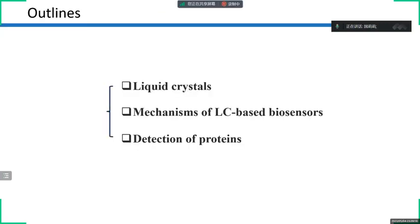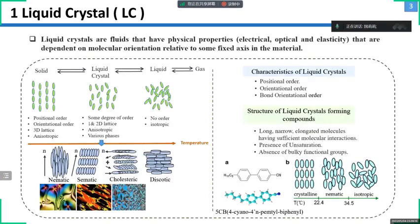First of all, about what liquid crystals are: they stay in the middle of the crystal state and the liquid state, so liquid crystals exhibit properties intermediate between a liquid and a crystal. There are four main categories of liquid crystals — nematics, smectics, cholesteric, and discotic — according to the arrangement of liquid crystal molecules.